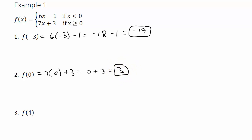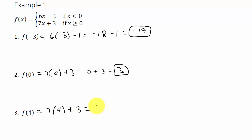Then we have f of 4. Since 4 is greater than 0, we use the 7x plus 3 piece, putting 4 in for x. That's 7 times 4 plus 3, which is 28 plus 3, which equals 31.